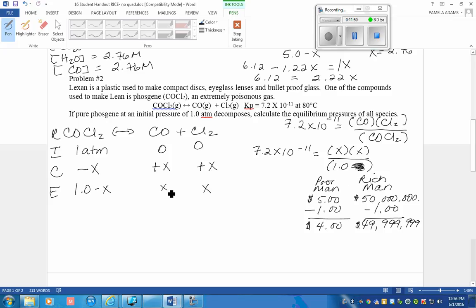Can you ignore it here, here, or here? No. Just in the math portion. So when we resolve this, 7.2 times 10 to the negative 11 equals X squared. X equals a very small number, 8.48 times 10 to the negative 6.